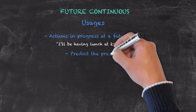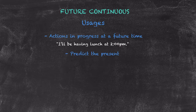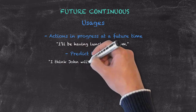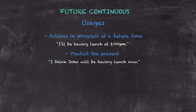We can use it to predict the present. Because we're predicting, we wouldn't often predict something about ourselves, so perhaps somebody has asked about a gentleman, John, and his whereabouts. You're not sure about his whereabouts, but you're going to predict it using the future form: I think John will be having lunch now.